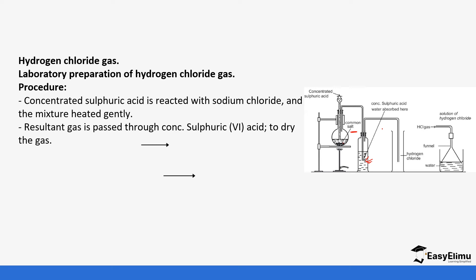The concentrated sulfuric acid dries the gas. The gas can either be collected or dissolved in water to form a solution, so the tube can be changed depending on the product you want to get. When we look at the reaction, concentrated sulfuric acid reacts with sodium chloride to form sodium hydrogen sulfate and hydrogen chloride gas.